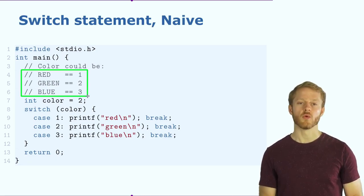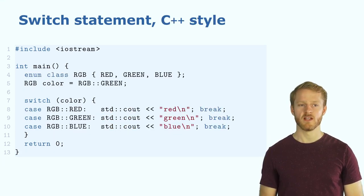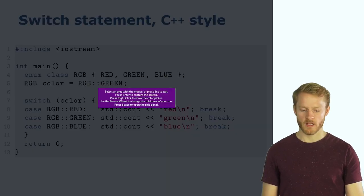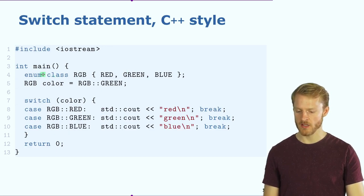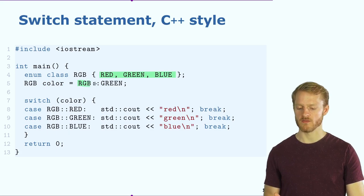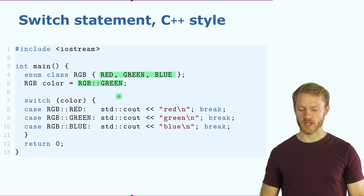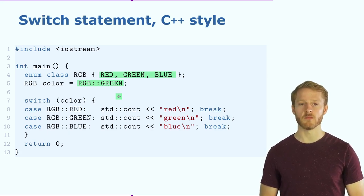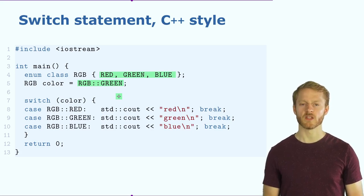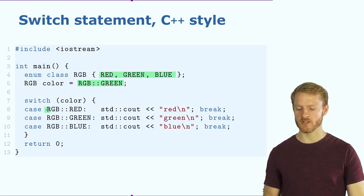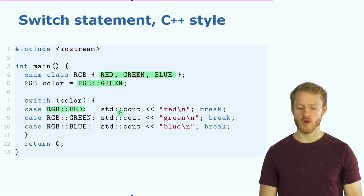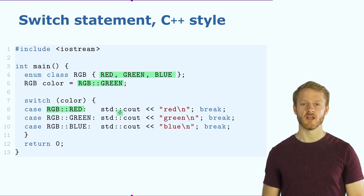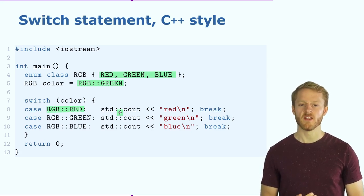Instead, we can use a C++ style switch with an enum class, specifying exactly which values the variable can take. When assigning a value, we use the enum directly. We cannot assign number 4 or an undefined value like RGB::violet — that causes a compilation error. This way we use the compiler to help us while building the program. In the switch, we see color::red directly and don't need comments to explain what 1 or 2 mean. This is good practice — use the compiler in your favor.